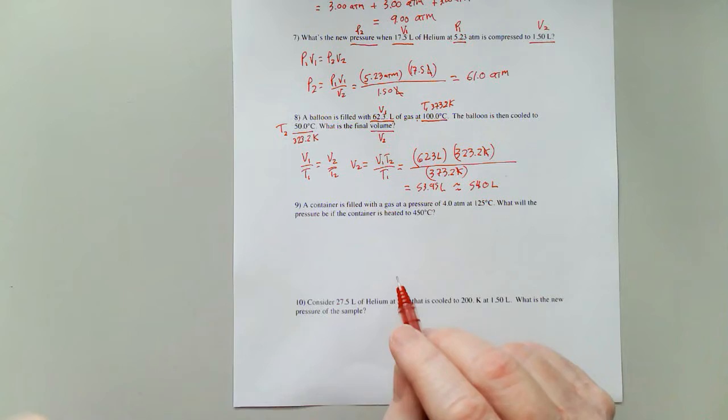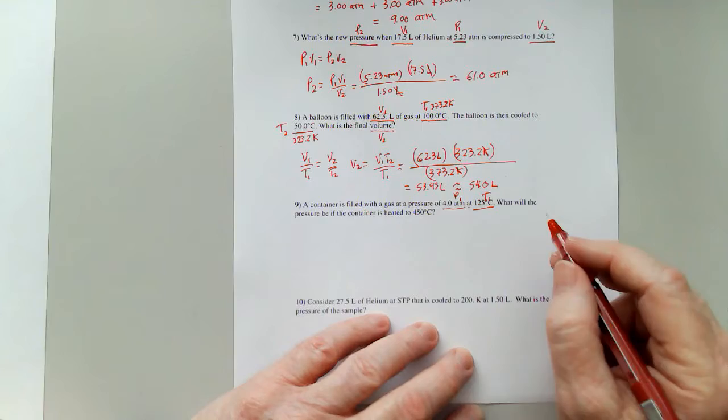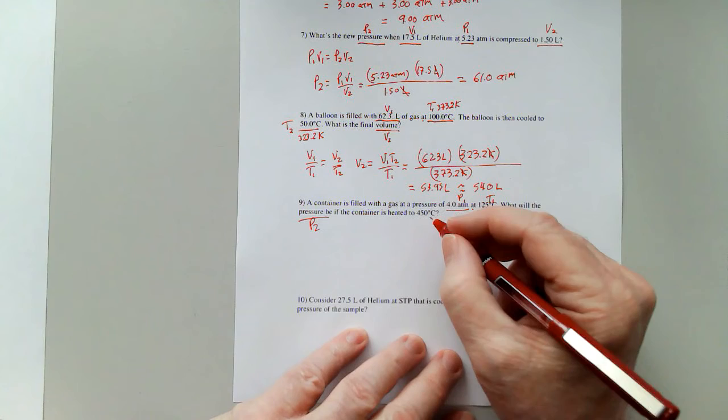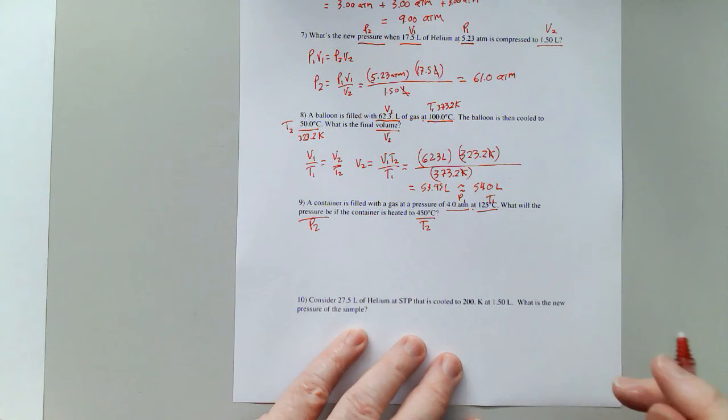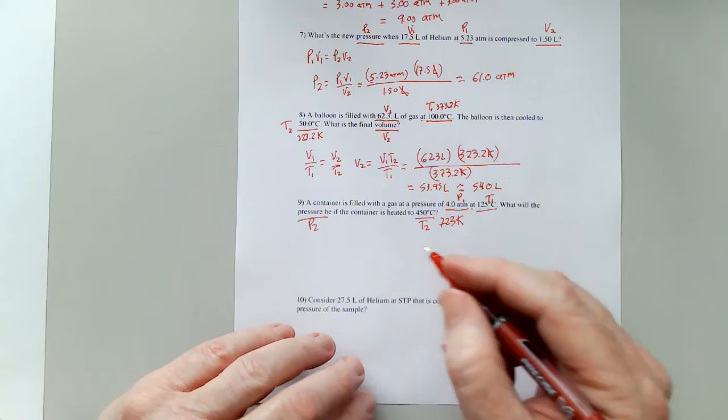Now for our next one here, a container is filled with a gas at a pressure of, so I know that's a pressure, 125 degrees Celsius, that's a temperature. We can call that P1 and T1 because of the word at. What will the pressure be? So I'm looking for P2 if the container is heated to 450 Celsius. We're going to call that T2. So that's plus 273 is 723 Kelvin. That's hot.